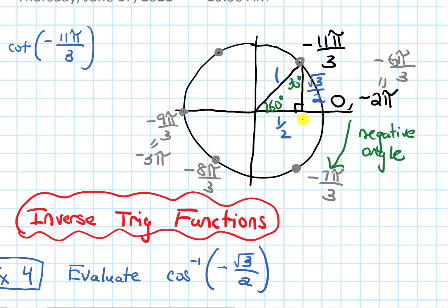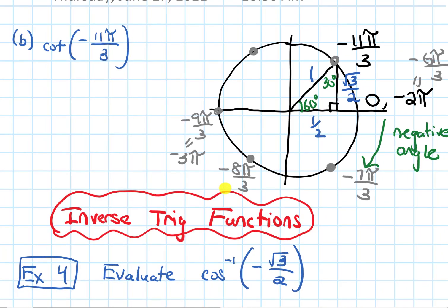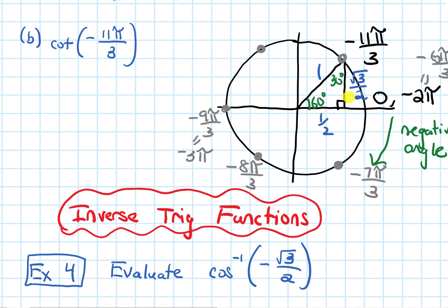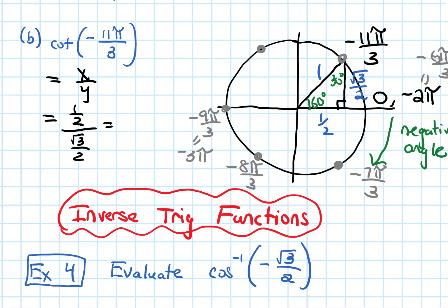Now I know the x and y values. Both x and y are positive here, so no negative signs needed. Cotangent is x over y, and the x-coordinate is 1/2 while the y-coordinate is √3/2. Dividing by that fraction is the same as multiplying by the reciprocal, so we get 1/2 times 2/√3. The 2's cancel and we end up with 1 over √3, and that is our answer.